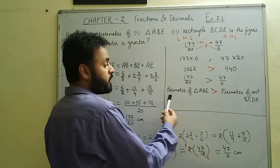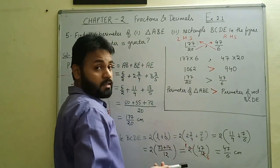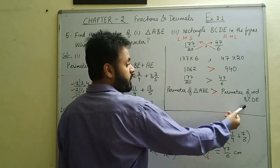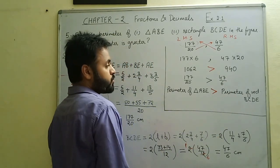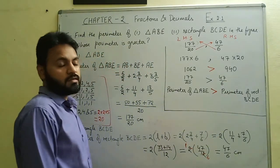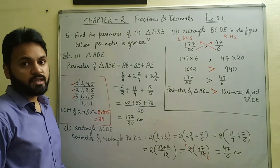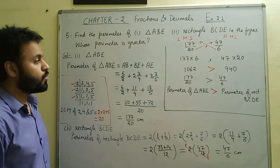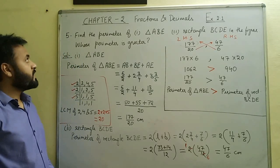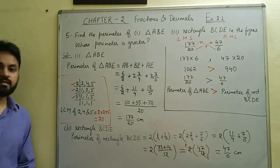Thus we conclude that the perimeter of triangle ABE is greater than the perimeter of rectangle BCDE. This is how we compare the perimeters of the triangle and rectangle.